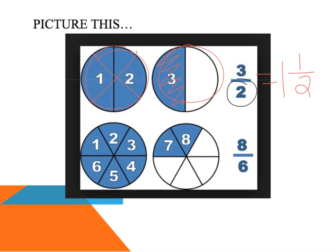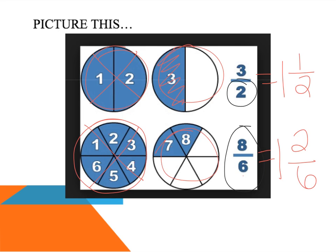Looking at eight sixths — I know it's more than one whole because the denominator is six and I have eight parts. In my model I have one, two, three, four, five, six parts for one whole, then seven and eight remaining. So I have one whole and two out of six parts — that's one and two sixths. Practicing simplifying: what can I divide both two and six by? I can divide both by two: two divided by two is one, six divided by two is three.